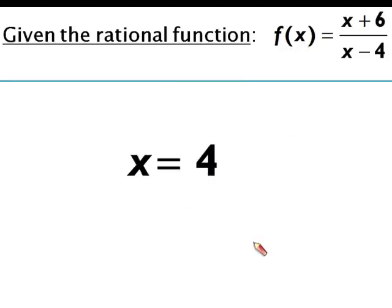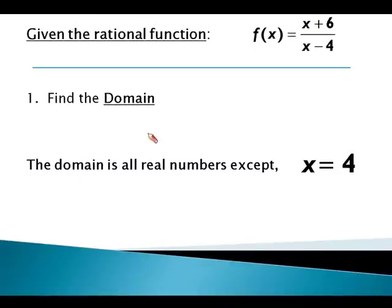So the answer to our question is the domain is all real numbers except x equals 4. Now why is that exception x equals 4? Remember it's all real numbers except what's going to give you a zero denominator. So x equals 4 would result in a zero denominator. So our domain will be all real numbers except for x equals 4.